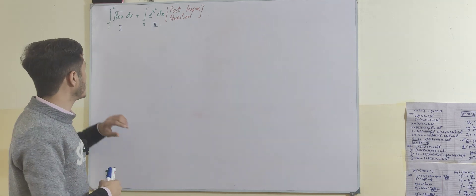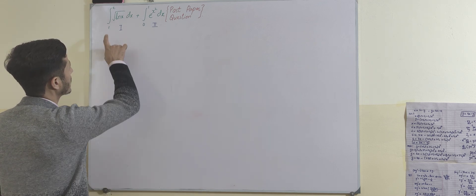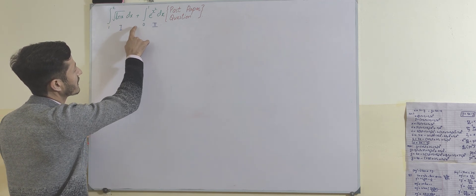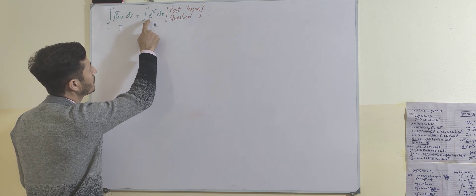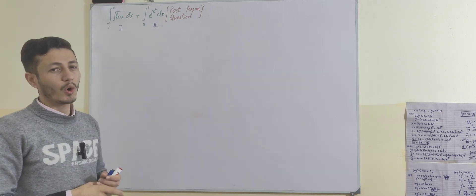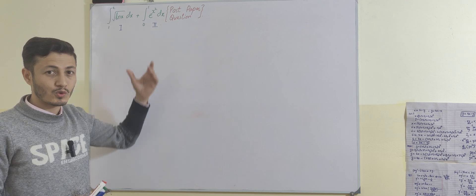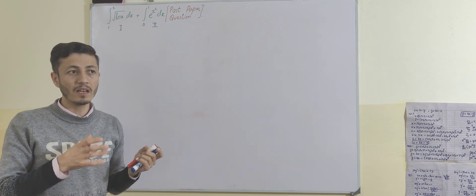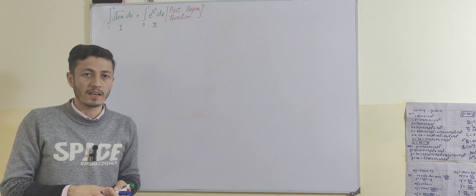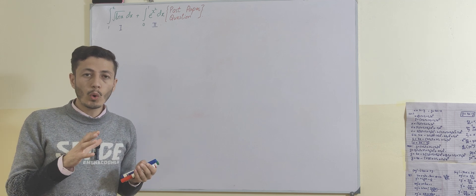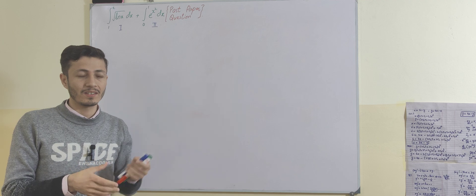The problem is the integral from lower limit 1 to upper limit e of the natural log of x under the square root dx, plus a second part: the integral from 0 to 1 of e^(x²) dx. The second part is a tricky one because solving this integrand generates the error function, and there is no formula in all of calculus to solve such an integrand.